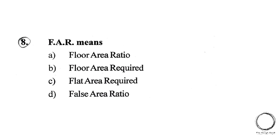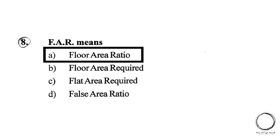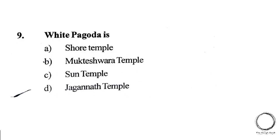Next question: F.A.R. means — A) Floor Area Ratio, B) Floor Area Required, C) Flat Area Required, D) False Area Ratio. The right answer is A) Floor Area Ratio. Next question: White Pagoda is — A) Show Temple, B) Mukteswar Temple, C) Sun Temple, D) Jagannath Temple. The answer is D) Jagannath Temple.